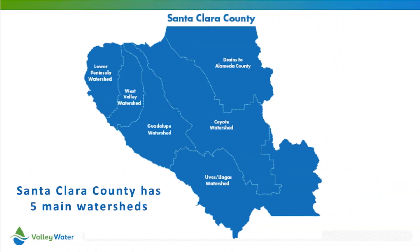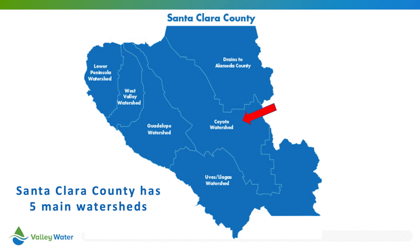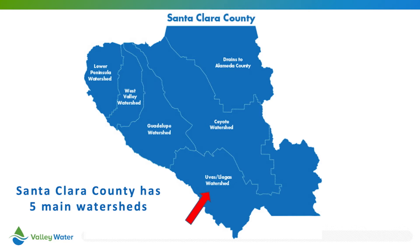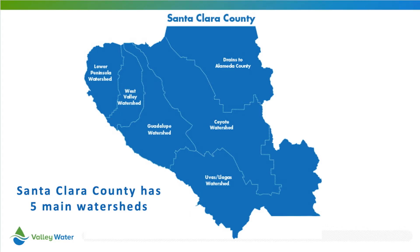In Santa Clara County, we have five main watersheds. The largest watershed in the county is the Coyote watershed. Sixteen major creeks drain into this watershed, including Coyote Creek, which is the longest creek in the county. We also have the Guadalupe, Lower Peninsula, Uvas Yagas, and West Valley watersheds, all of which drain precipitation into their nearest body of water.